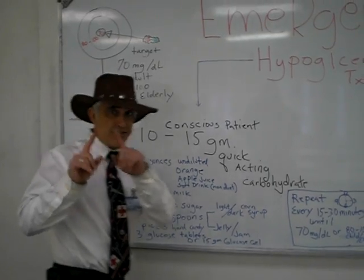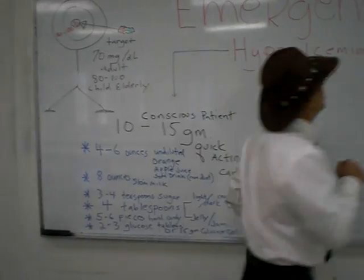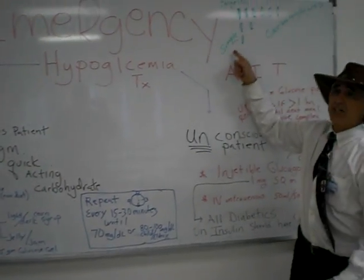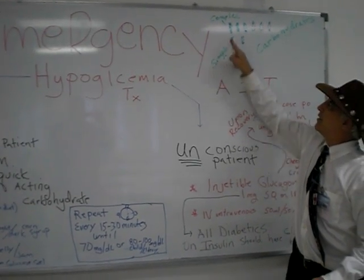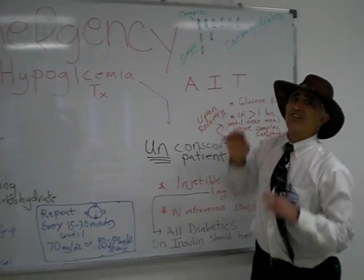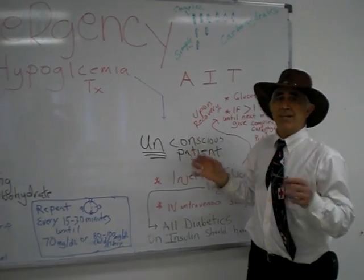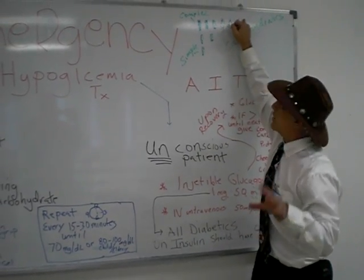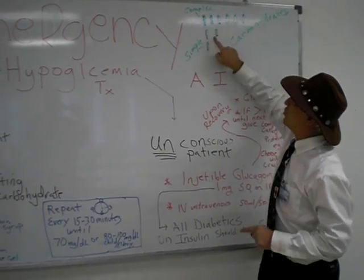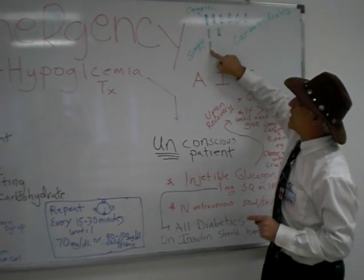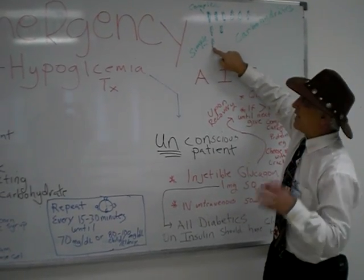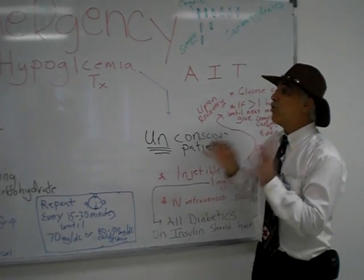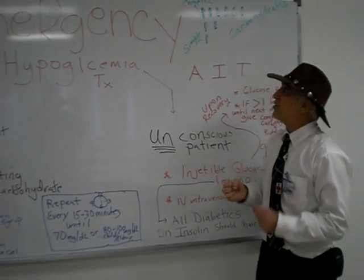Let's have a quick lesson on carbohydrates. We have complex carbohydrates and simple carbohydrates. Complex carbohydrates take time — they have to be broken down from polysaccharides (multiple sugars) to a disaccharide, then to a monosaccharide where they can be absorbed. What we want is to bring the sugar up fast, so we want simple carbohydrates.